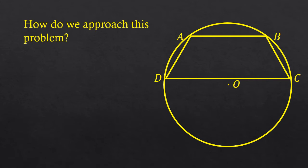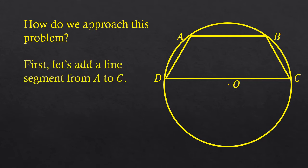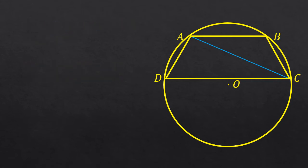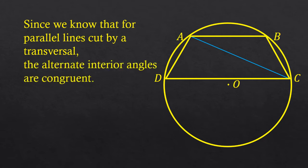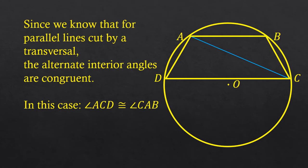So how do we approach the problem? This is the key question when doing a geometric proof — where do we go from here? What I'm going to do is draw a line segment from A to C. You can always draw line segments on a figure to help prove something. Here, the blue line I've drawn goes from A to C. Since AB and DC are parallel to one another, we can consider AC as a transversal. For parallel lines cut by a transversal, the alternate interior angles are congruent — that is, angle ACD is congruent to angle CAB.